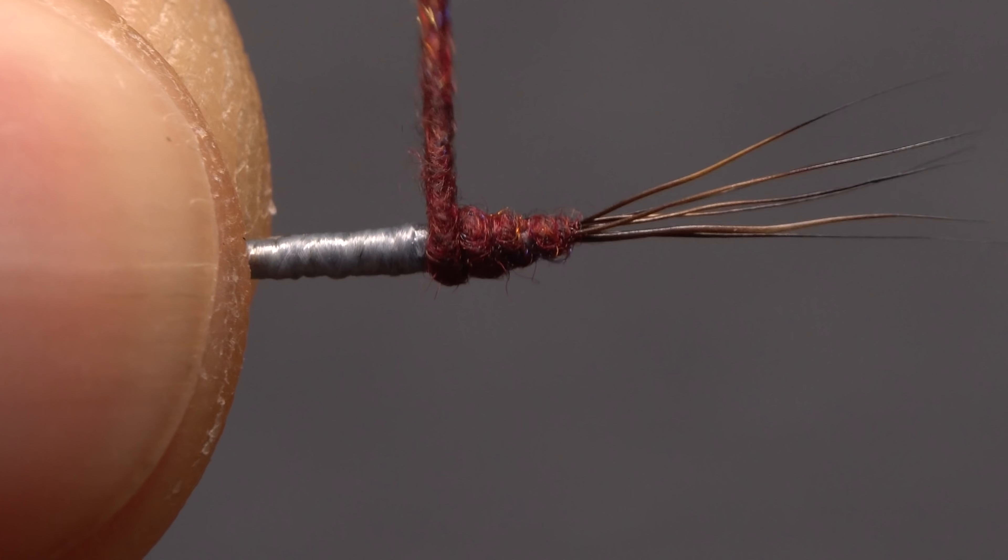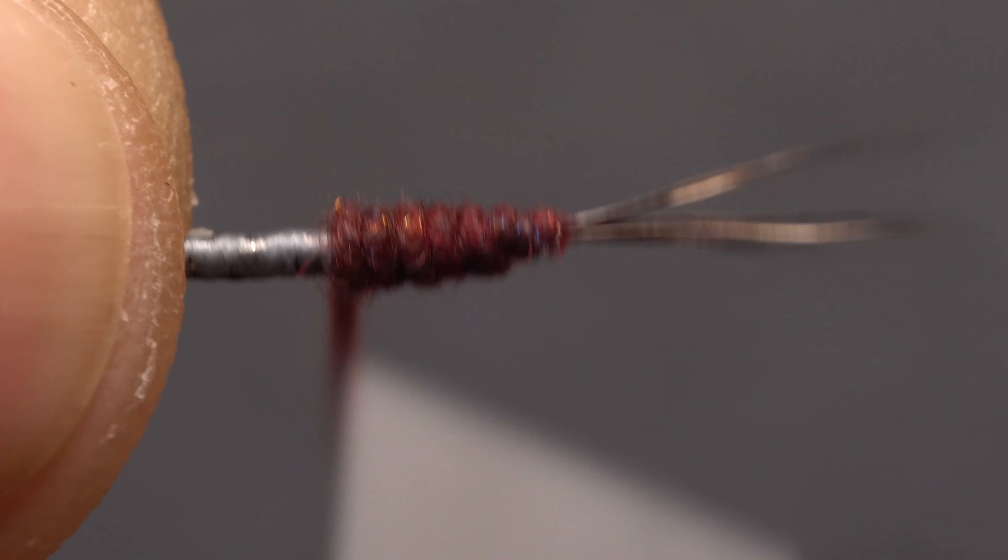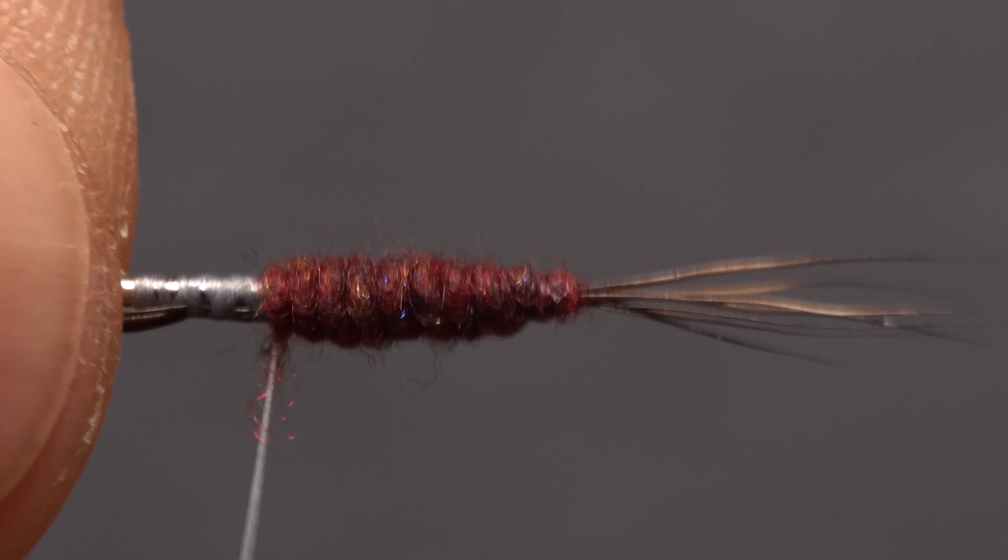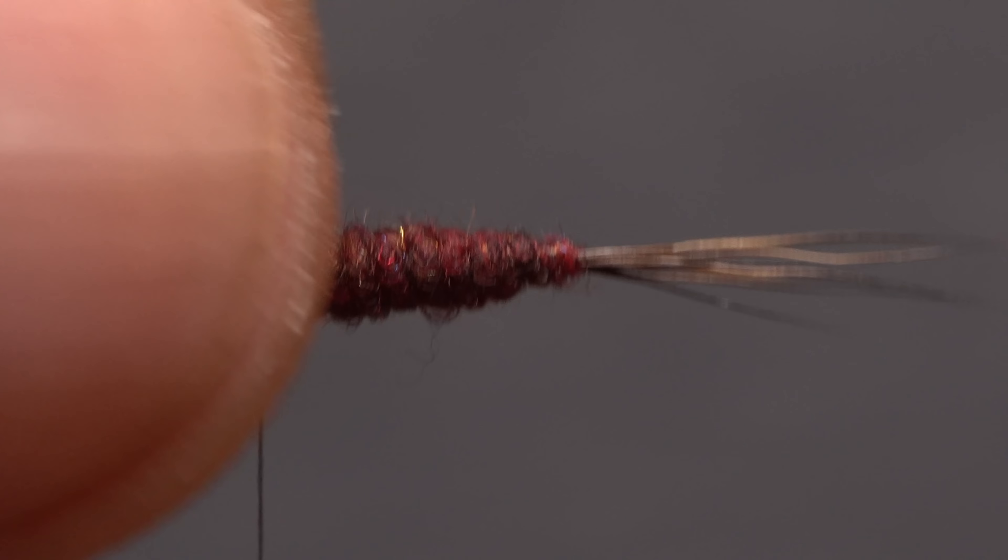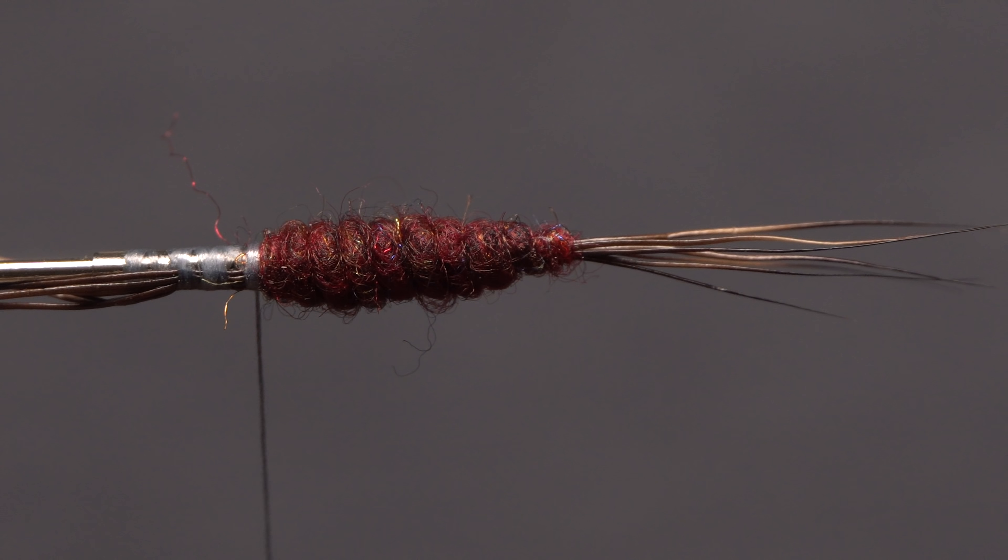Start taking wraps so the dubbing begins right at the base of the tail. Then, make touching wraps to the left to create the body of the fly. The length is really up to you on the extended body. I like them to be approximately the same length as the tail.